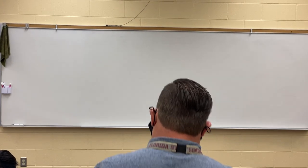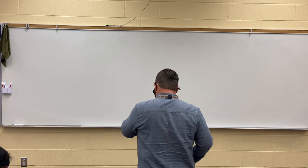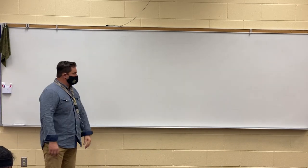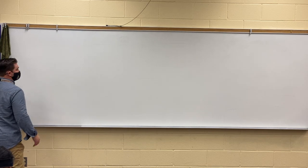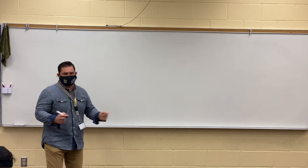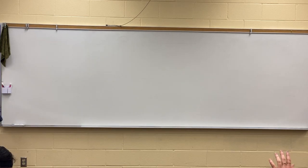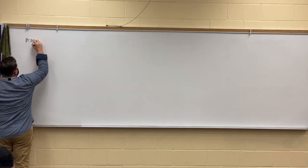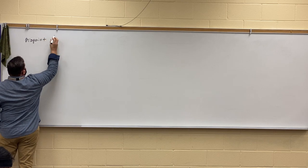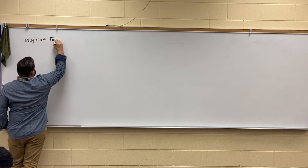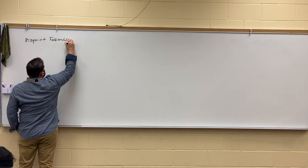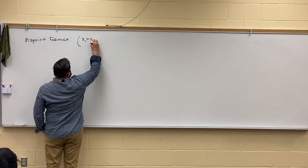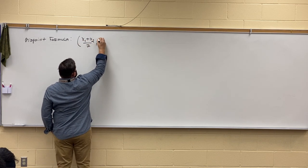All right, guys, for the last couple of days we have been going over some stuff you learned out of algebra, and let's start to go back over that. Who can tell me what is the midpoint formula? Ms. Battenmeyer, what we say is the midpoint formula: X sub 2 plus X sub 1 over 2, comma, Y sub 2 plus Y sub 1 over 2.